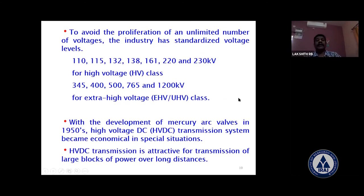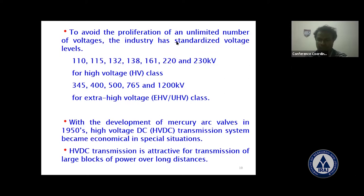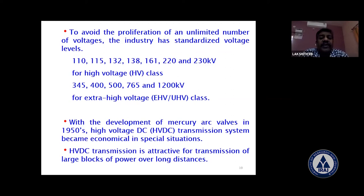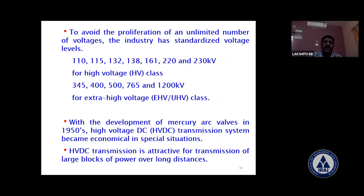To standardize voltage levels, the industry adopted 110 kV, 115, 132, 138, 161, 220–230 kV for extra high voltage lines, then 345, 400, 500, 765, and now 1200 kV for ultra high voltage transmission lines. With the development of mercury arc valves in the 1950s, high voltage DC (HVDC) transmission systems became economical in special situations. HVDC transmission is very attractive for transmitting large blocks of power over very long distances.